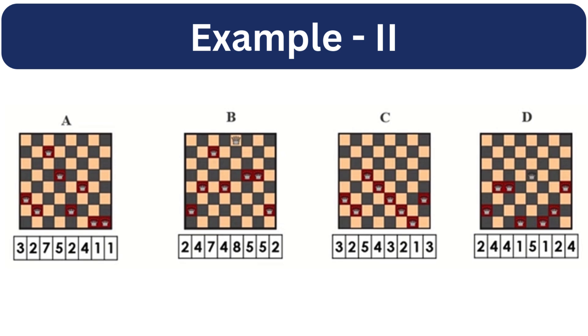For example, if we see the first individual, the first gene is 3. That means the queen is placed in first column and third row counted from bottom to top.